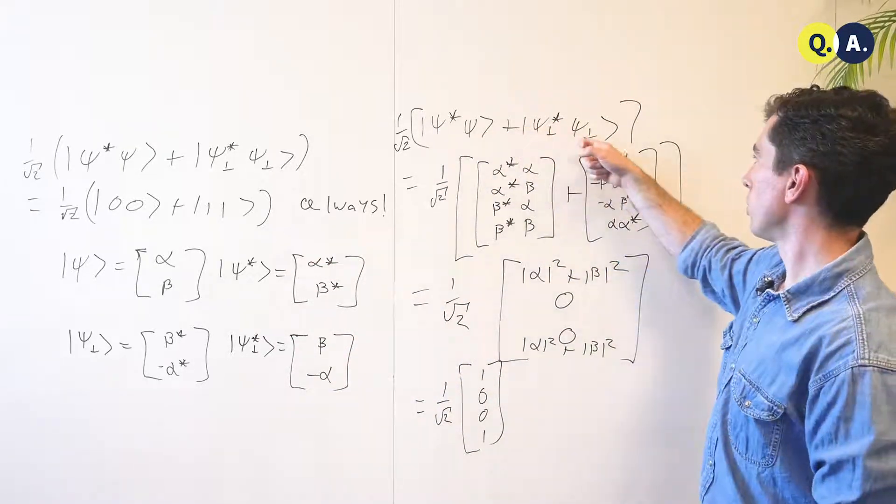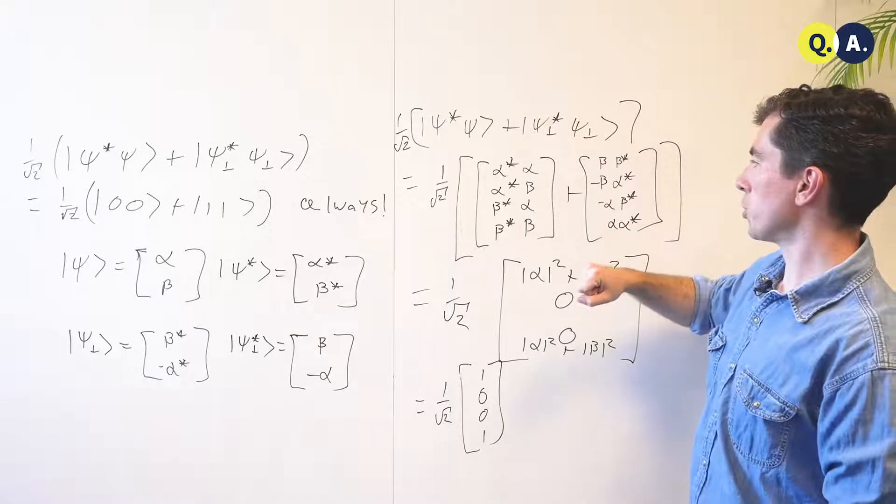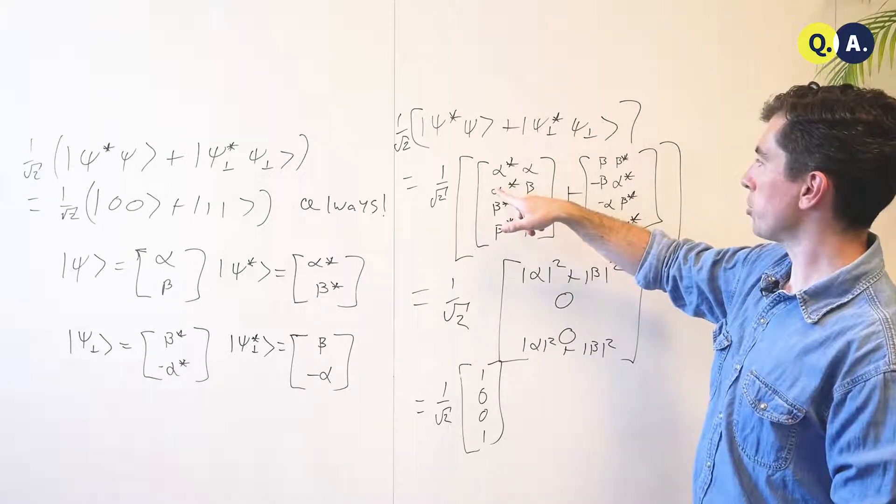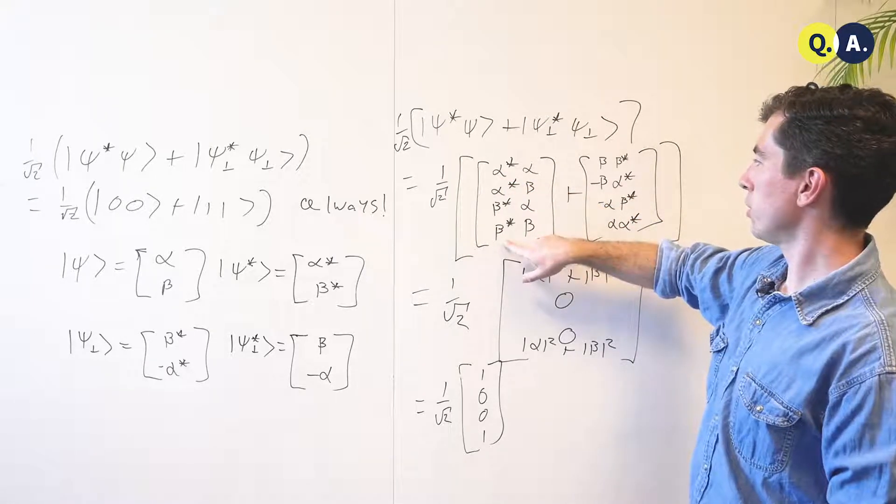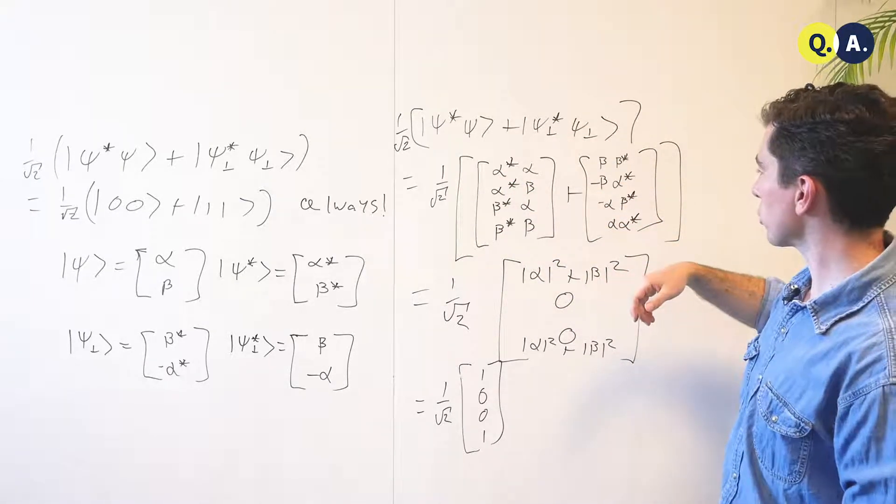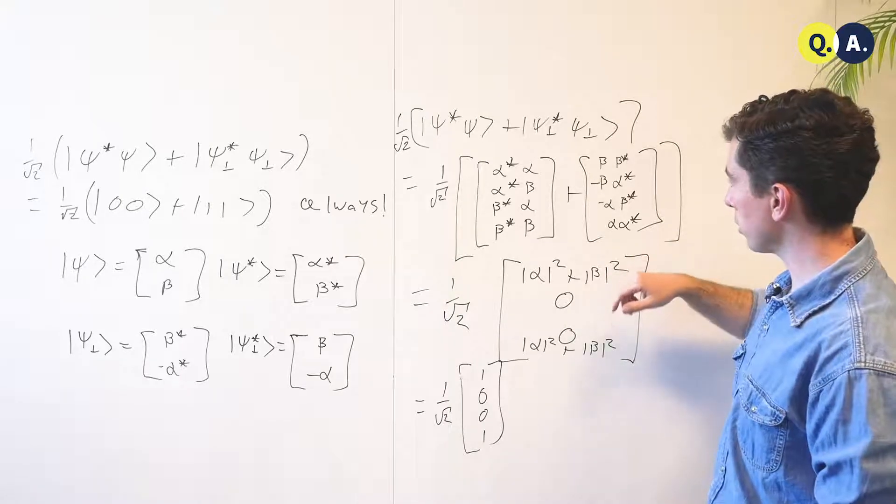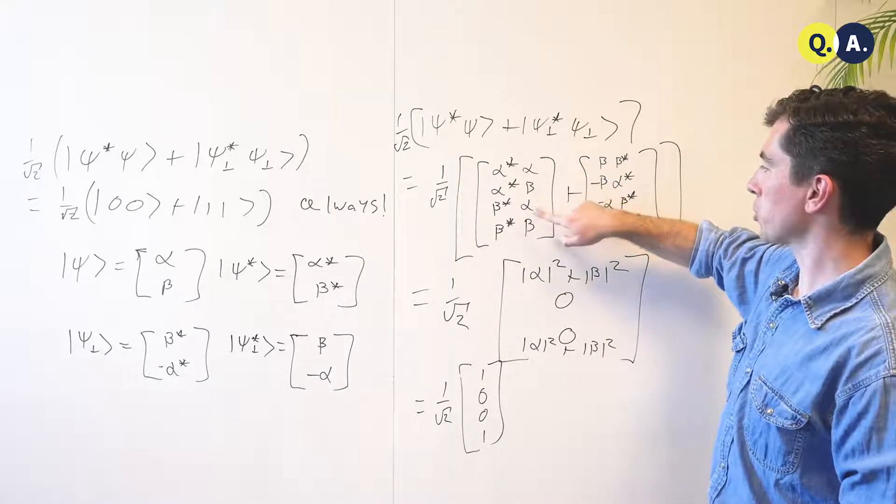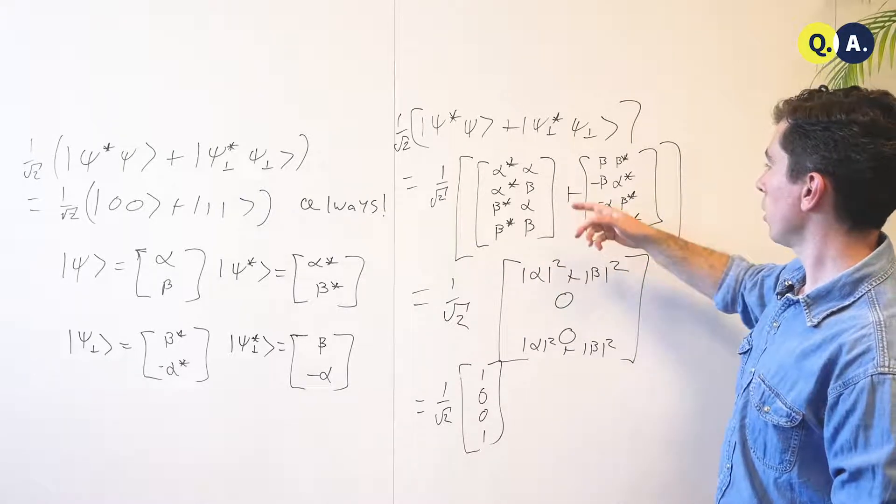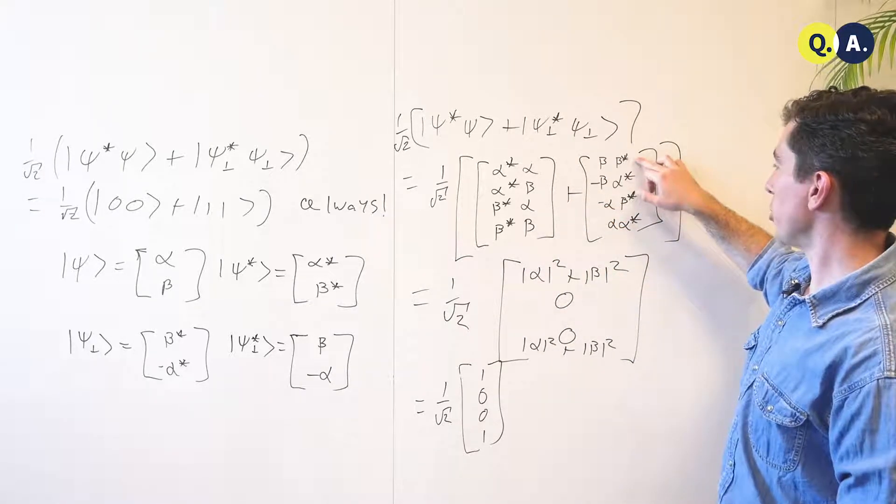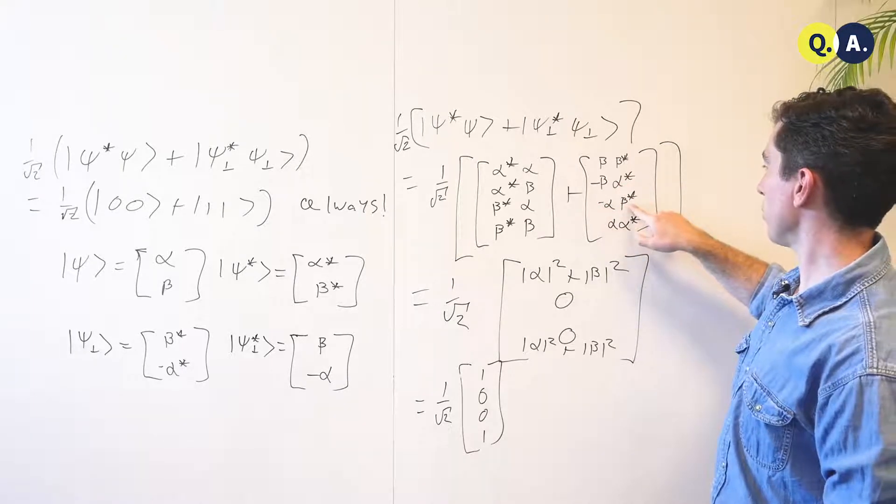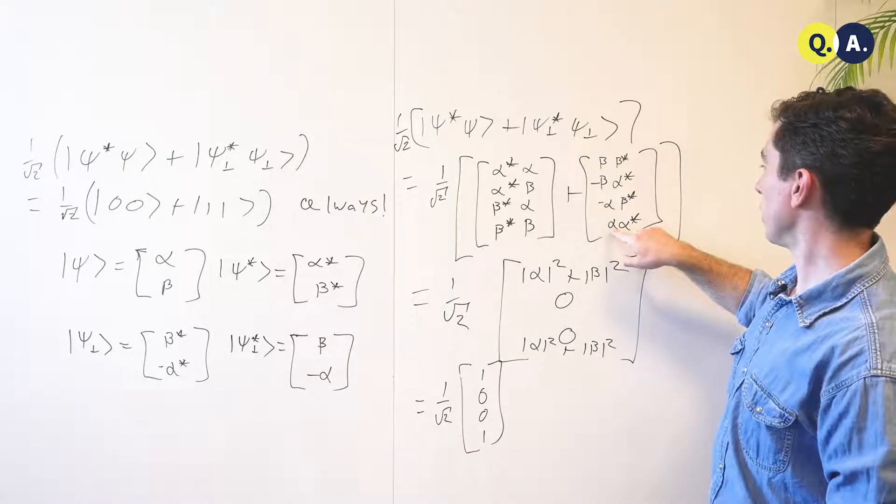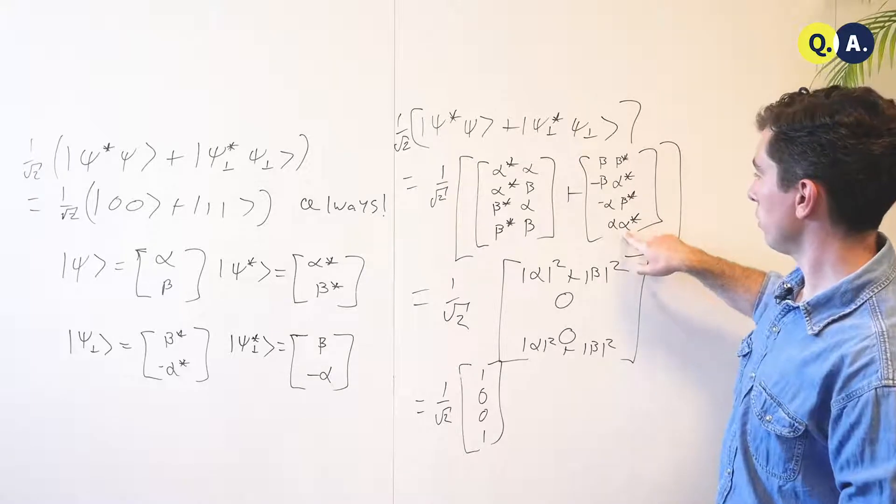And if we write out all of our tensor products using the formula that we learned earlier, we obtain a pair of densely packed vectors full of these coefficients, which would be very awkward in ket notation, but we have here alpha star alpha, alpha star beta, beta star alpha, and beta star beta, and we're going to add to that beta star beta minus beta alpha star minus beta star and alpha alpha star.